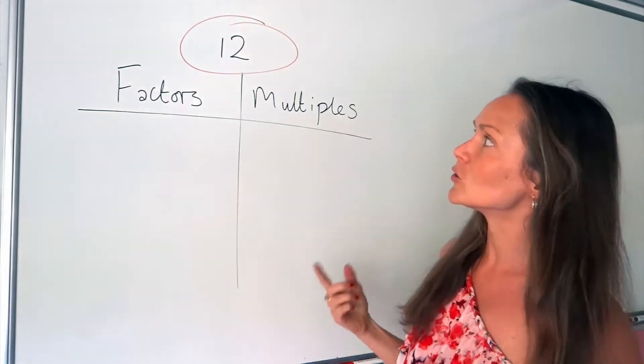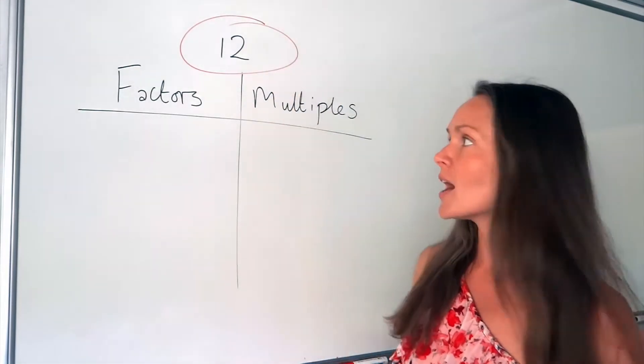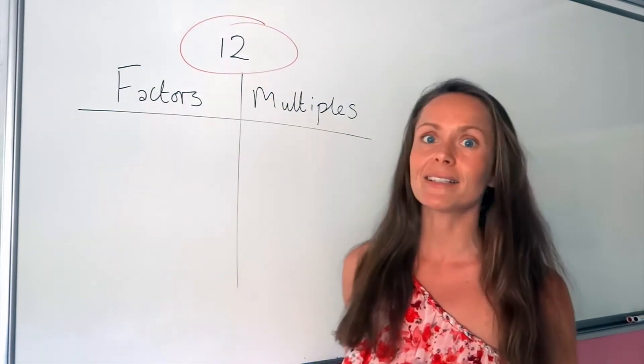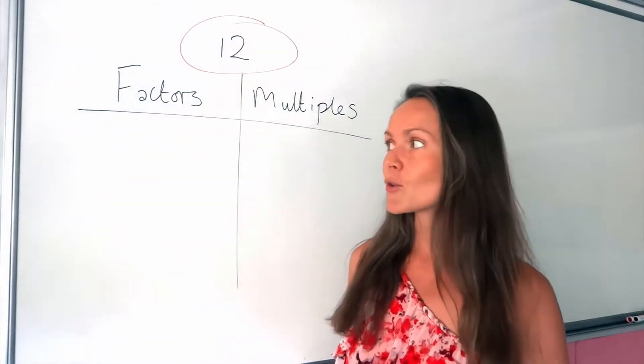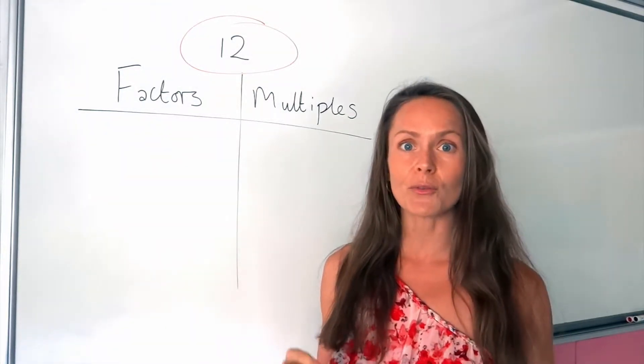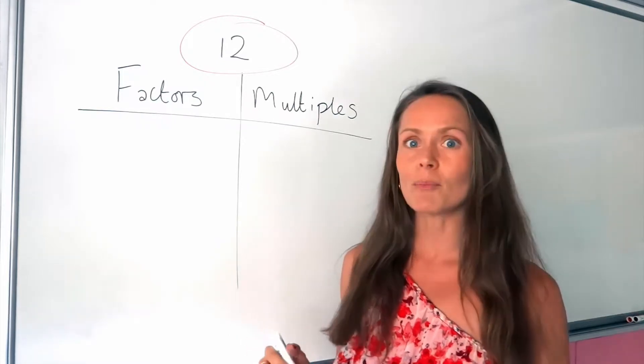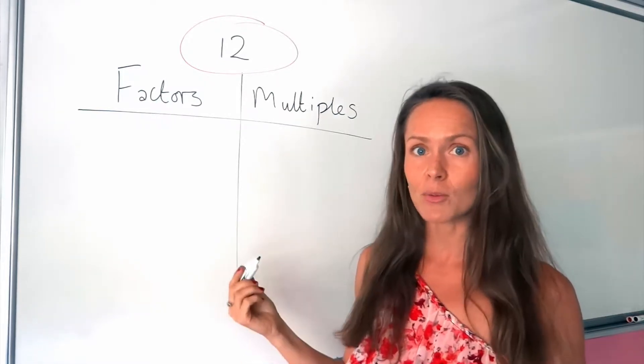So the first example I'm going to use is the number 12. And I'm going to start by writing down the factors for 12. So factors are the numbers that fit exactly into that number. So all the numbers that you times together to give 12.